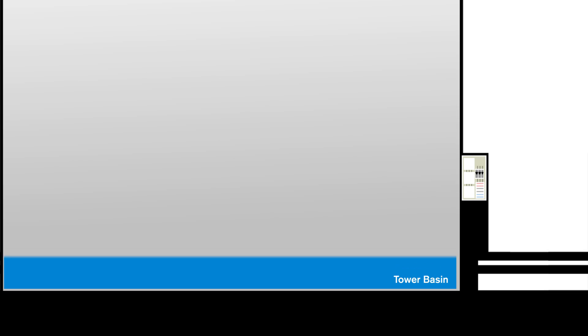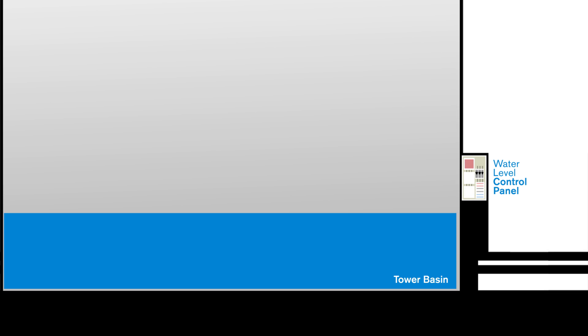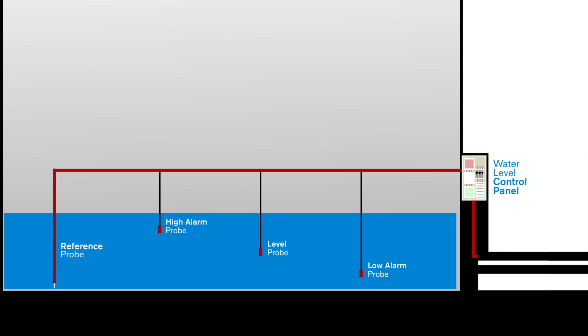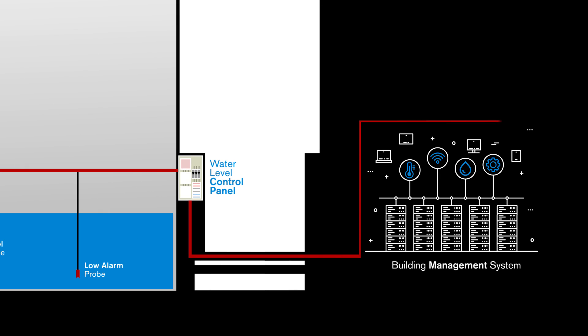This water level panel uses conductivity as a means to determine the level of the water in the basin of the cooling tower. It conducts electricity from a reference probe hanging in the water to other probes that represent different level heights in the cooling tower. This is used in lieu of using a float valve when you're looking for more information back from the control panel to the building management system.